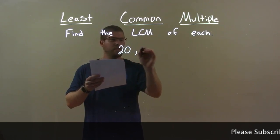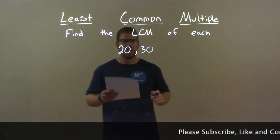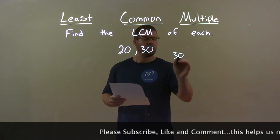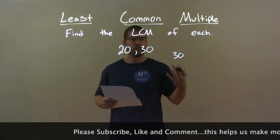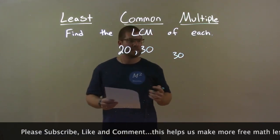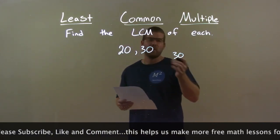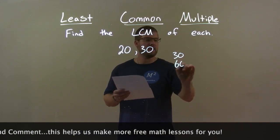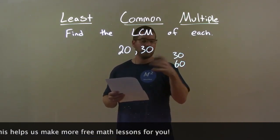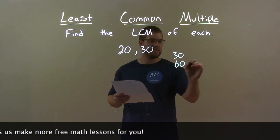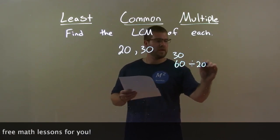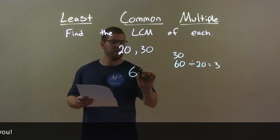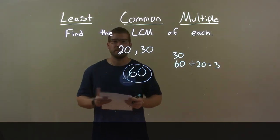20 and 30. I take the larger of the two numbers, 30, and find its multiples to see which one is divisible by 20. 20 doesn't go into 30, so the next multiple is 60. Does 20 go into 60? Yes — 60 divided by 20 is 3. So my answer here is just 60.